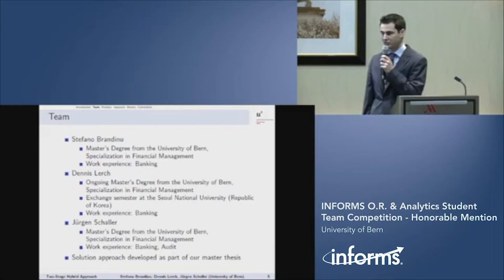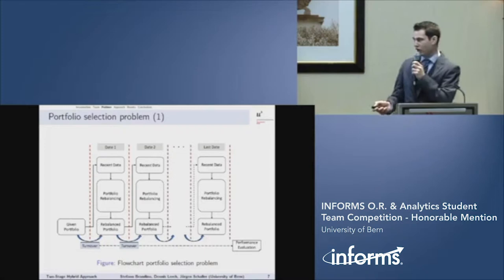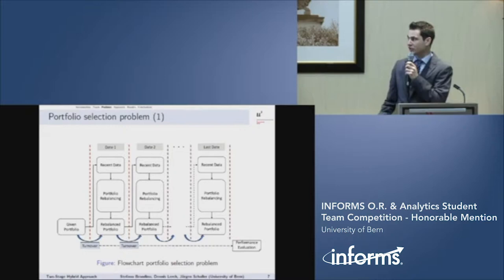And now to the portfolio selection problem. This figure here shows an overview of the upcoming portfolio selection problem. We start with a given portfolio. Over a given investment horizon, we periodically rebalance the portfolio to the current market situation. For this purpose, we use at each rebalancing date the most recent data from a given stock market index. At the end, we evaluate the performance of the rebalanced portfolio at each rebalancing date.